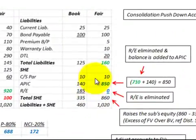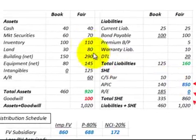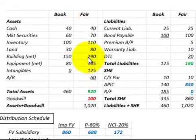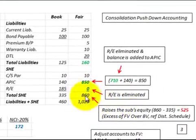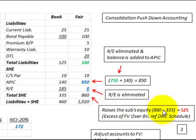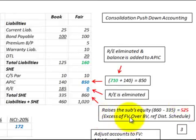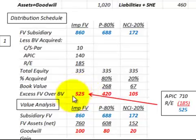Reviewing the balance sheet for what we've done in this push-down accounting: we increased additional paid-in capital by $710,000, which was the difference between book value and fair value for the assets and liabilities, and it also included the retained earnings, which we reduced from $185,000 down to zero. We've raised the sub's equity account from $335,000 up to $860,000 at fair value. The difference of $525,000 is the excess of fair value over book value shown in our distribution schedule.